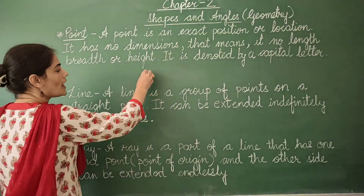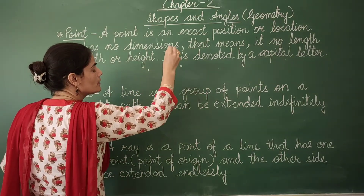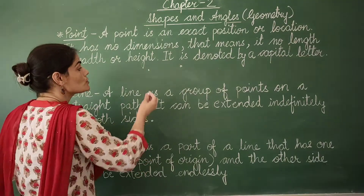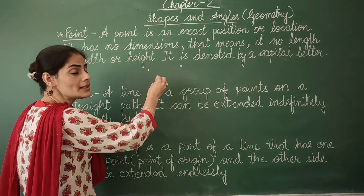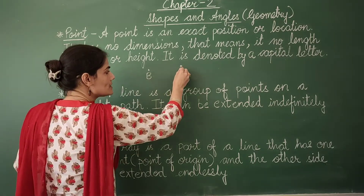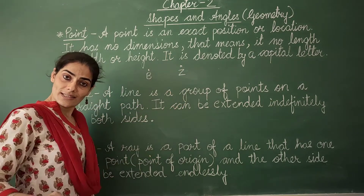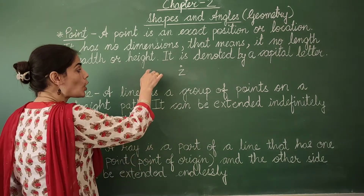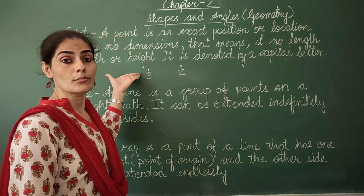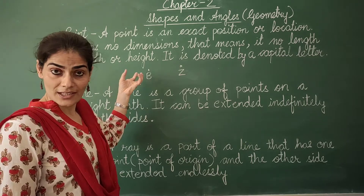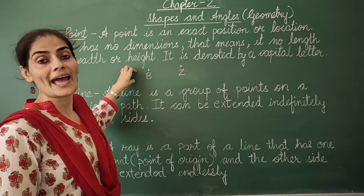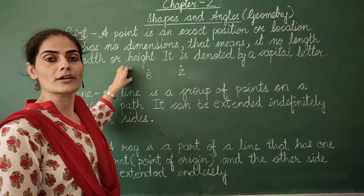Now, if I mark two dots here and I want to give them names so that they have their own identity, I need to use capital letters. Let's name it as point B and let's name this point as point Z. By observation only you can tell that it has no length, breadth, or any kind of thickness. So, what is a point? A point is an exact position or a location.